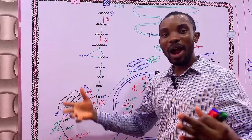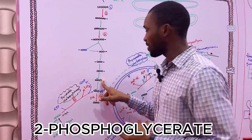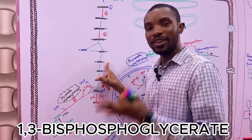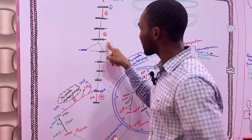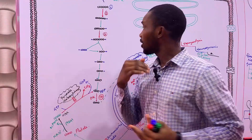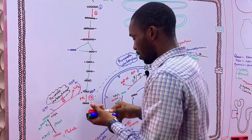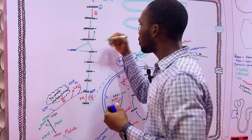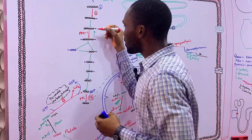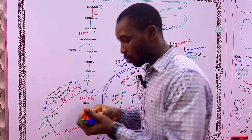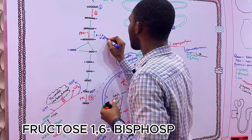Now that we have phosphoenolpyruvate, the reverse reactions of glycolysis proceed: PEP → 2-phosphoglycerate → 3-phosphoglycerate → 1,3-bisphosphoglycerate → glyceraldehyde-3-phosphate. However, glyceraldehyde-3-phosphate cannot be directly converted to fructose-1,6-bisphosphate in reverse, because the phosphofructokinase-1 reaction is irreversible — that's the second roadblock.